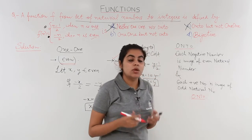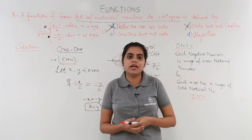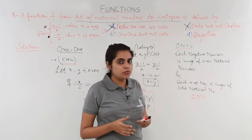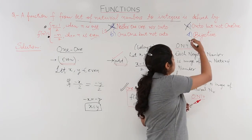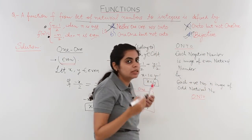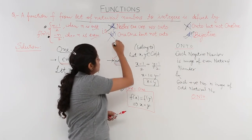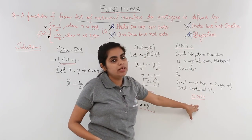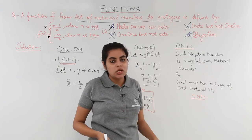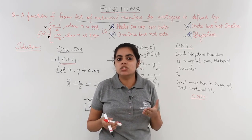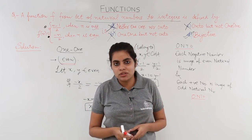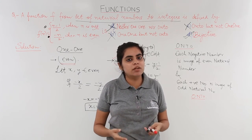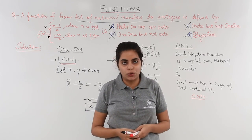Since the function is both one-one and onto, it is a one-one onto function — which is a bijective function. So the answer is option D, and option B is cancelled because it says 'not onto,' while we have derived that it is onto. In this video we saw the second problem based on bijective functions, wherein we checked whether the given piecewise function from natural numbers to integers is one-one onto.